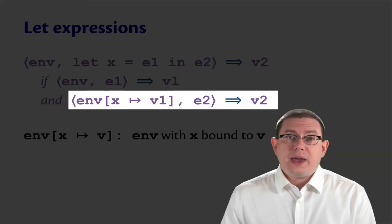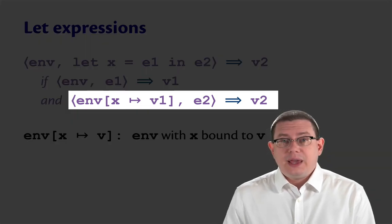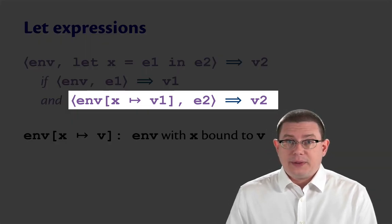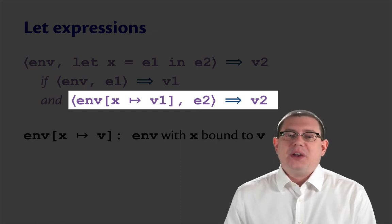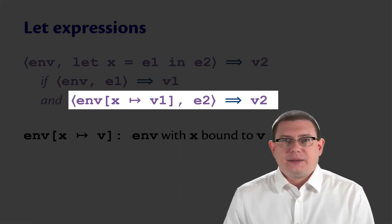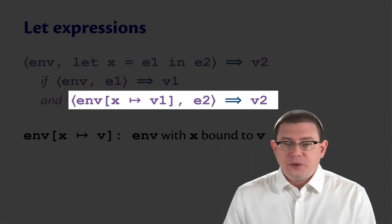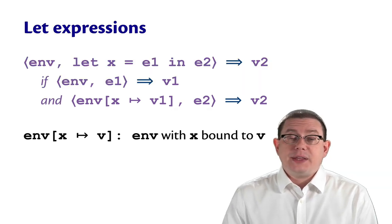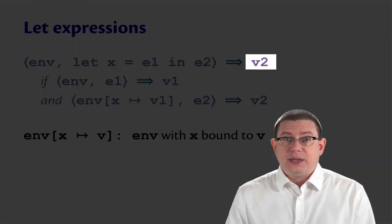So now we will evaluate e2 in that extended environment that records the lazy substitution of v1 for x. That will get us a value v2 and the result of evaluating the entire let expression will be v2.